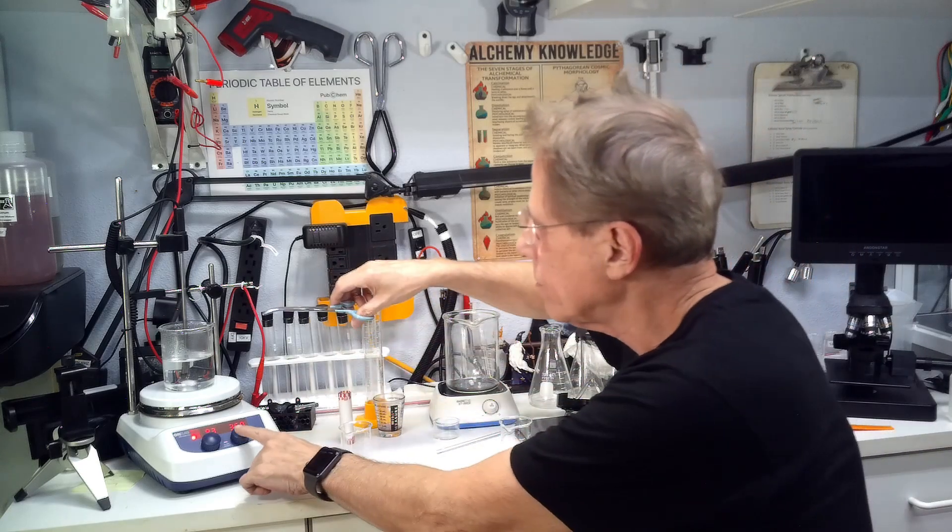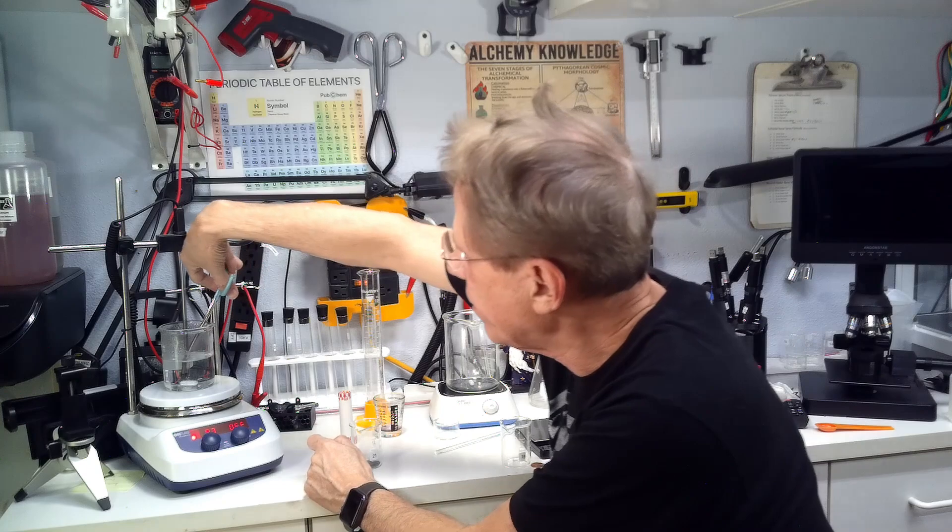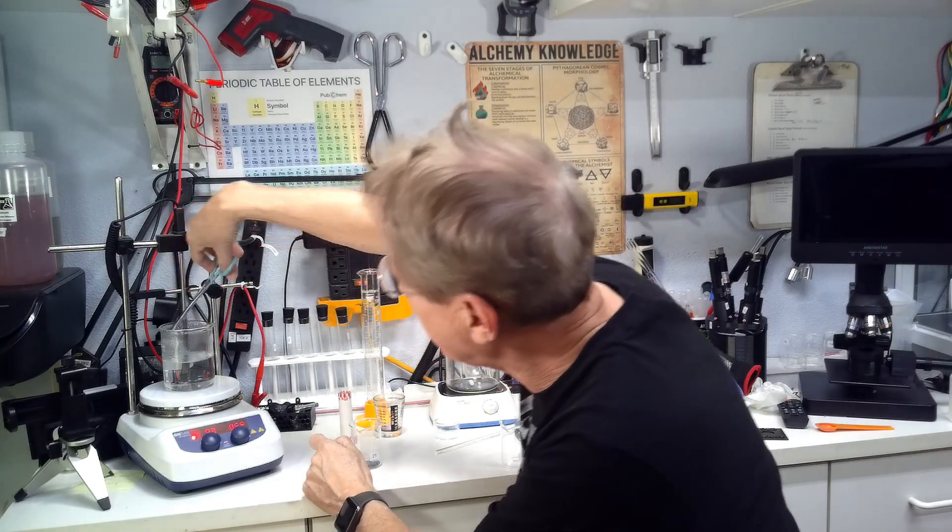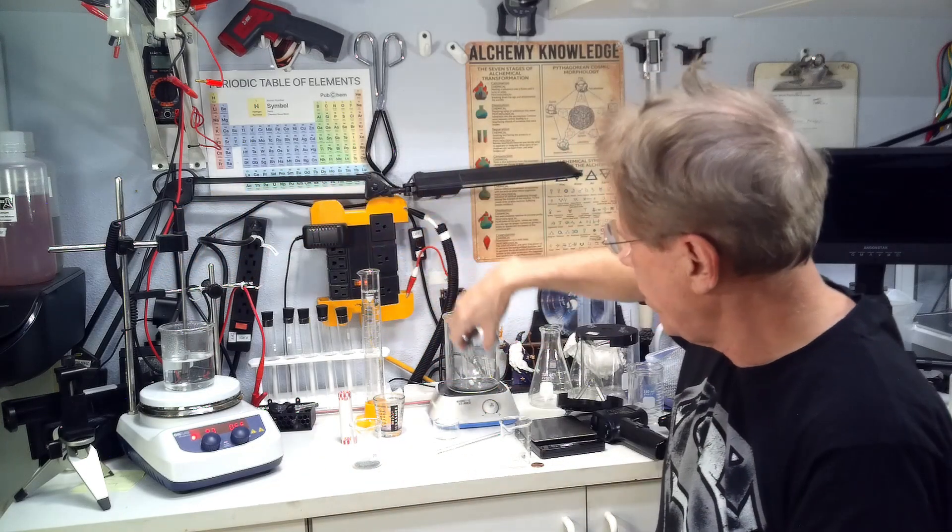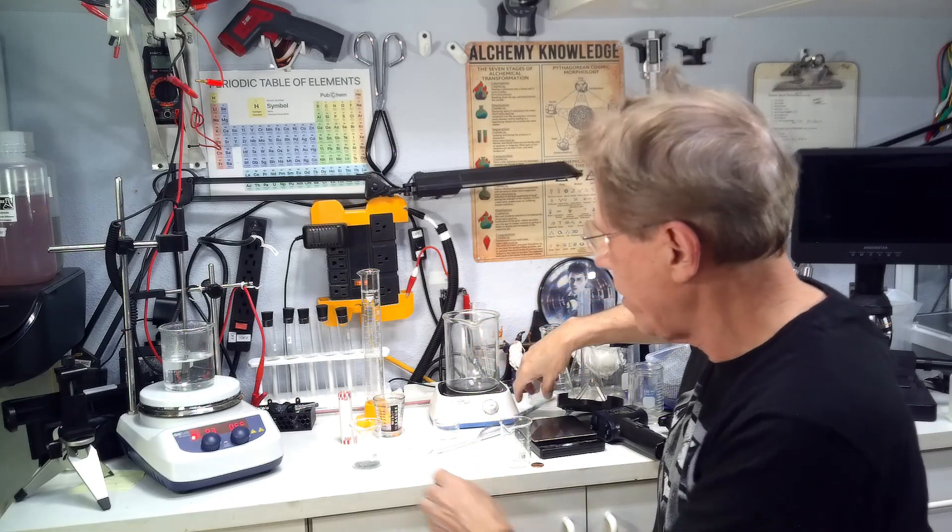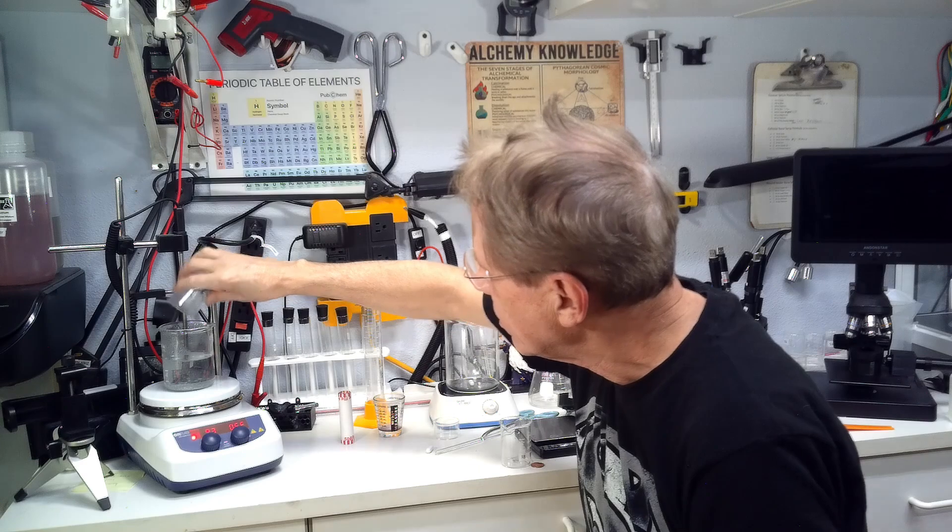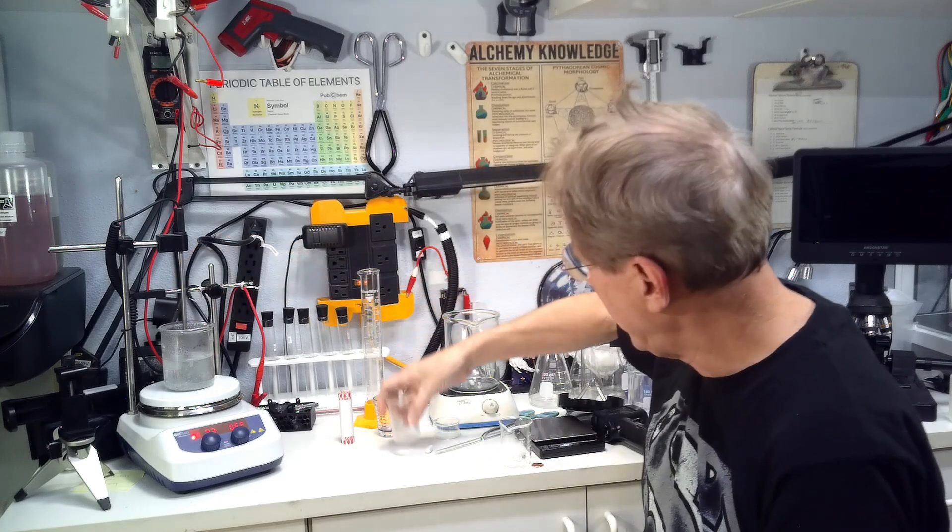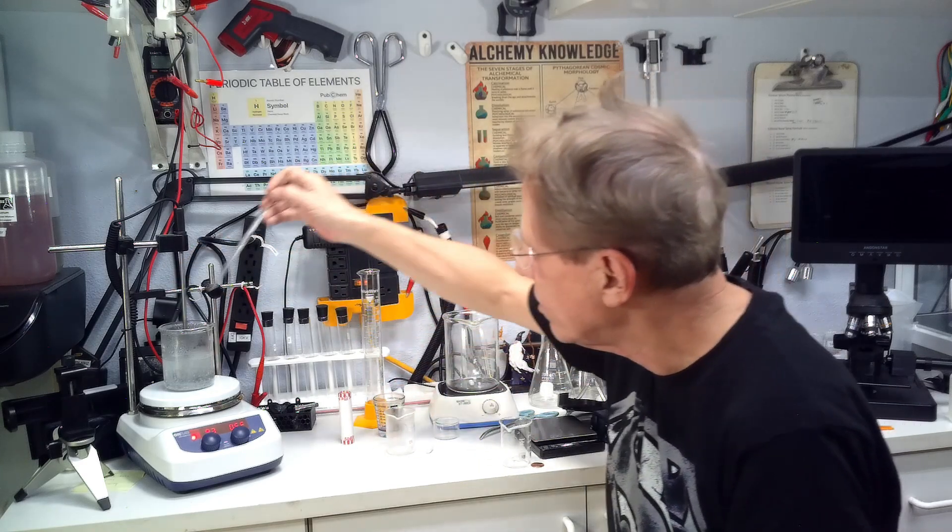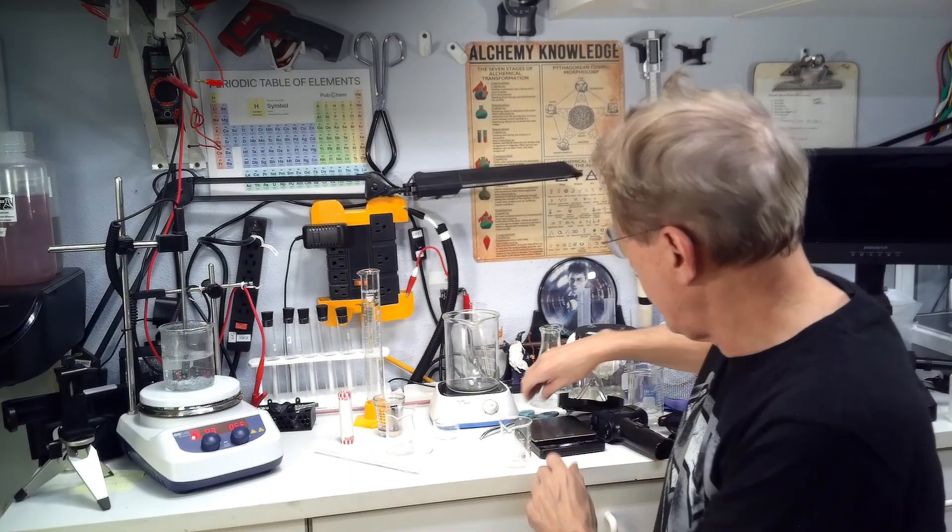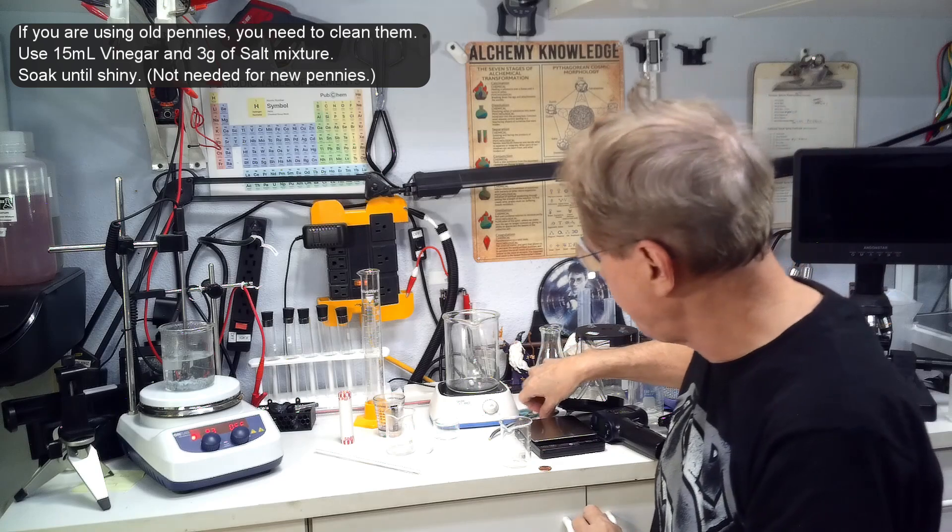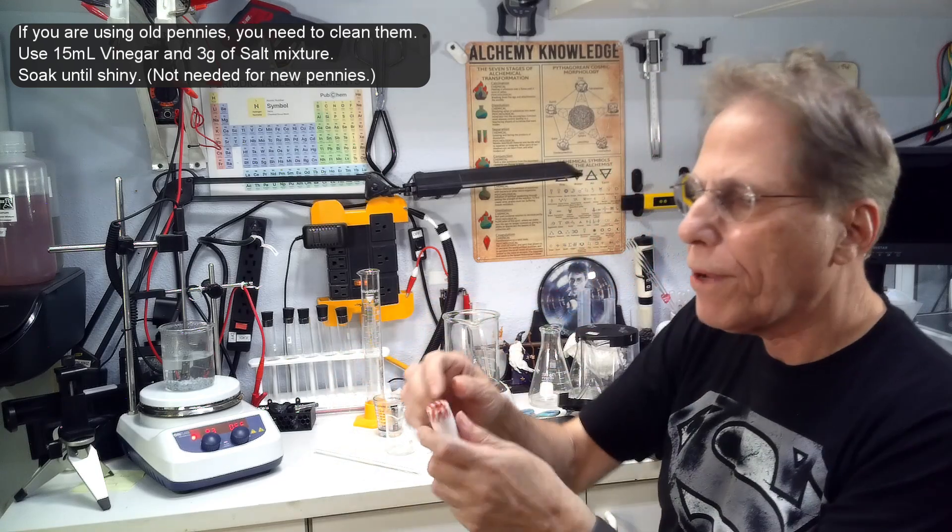So I'm going to turn off the stirrer here. I just wanted to make sure we had it all stirred. I'm going to remove the little stirrer bullet thing and we're going to pour in the zinc in the bottom. You're not supposed to touch these pennies. This is a brand new roll of pennies here.